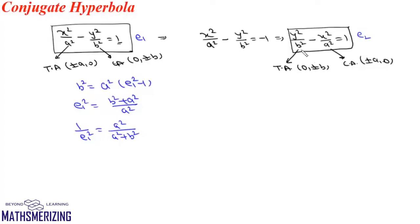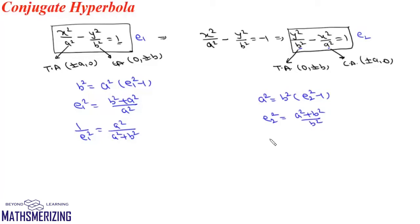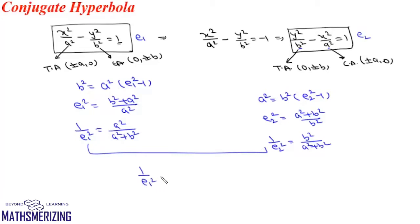Since a and b are interchanged for the conjugate hyperbola, we can write a² = b²(e₂² - 1), giving e₂² = (a² + b²) / b², and so 1 / e₂² = b² / (a² + b²). Adding these two results: 1/e₁² + 1/e₂² = (a² + b²) / (a² + b²) = 1.